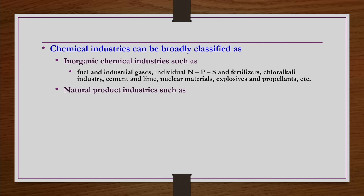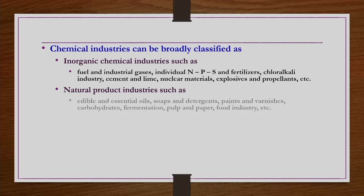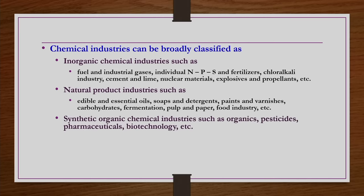Another group is natural product industries, where we have edible and essential oils industries, soaps and detergents industries, paints and varnishes, carbohydrates, fermentation, pulp and paper, food industry, etc. Then there are synthetic organic chemical industries such as organics preparation, pesticides, pharmaceuticals, biotechnology, etc. This is the third group.